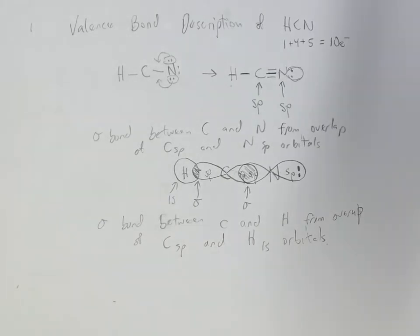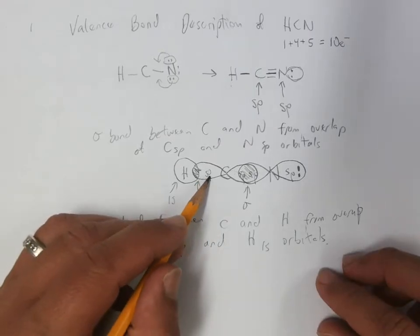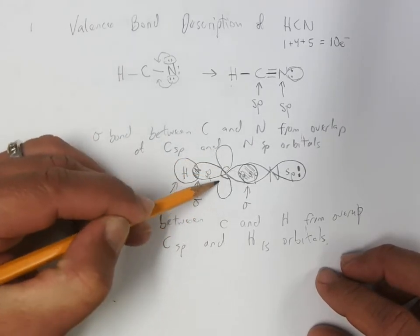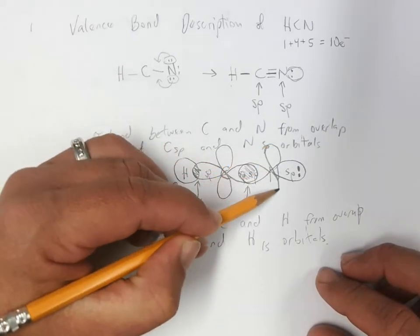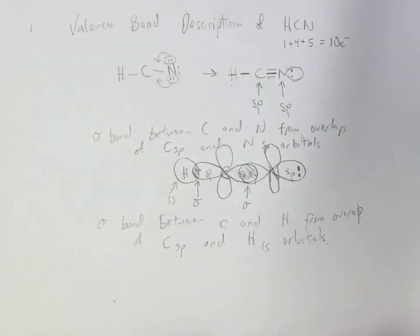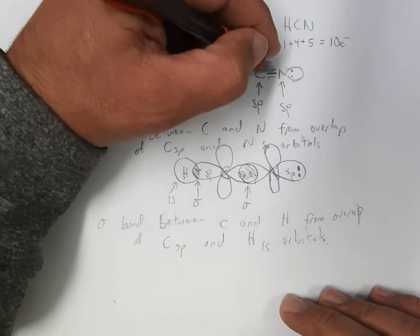So there's the sigma framework. And then any time you make sp orbitals, use s and p atomic orbitals, normal atomic orbitals, that leaves us a few p orbitals left over. And that's where your multiple bonds come from, any additional bonds there, which sometimes I like color coding.